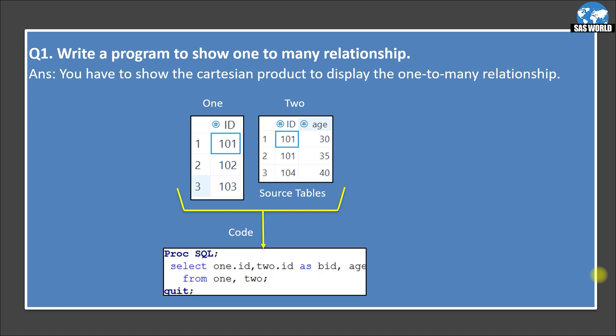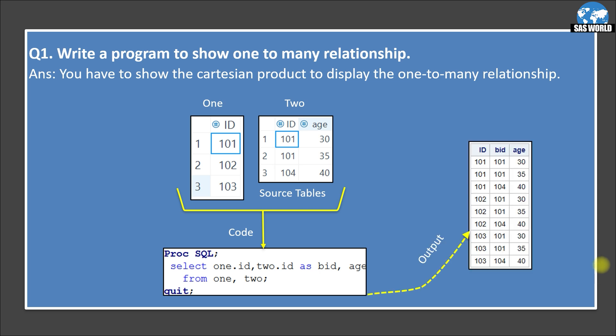So from SQL, select 1.id, 2.id as bid, age from 1, 2 quit. So when you run this code, it will generate the cartesian product of these two tables. So here if you can see,